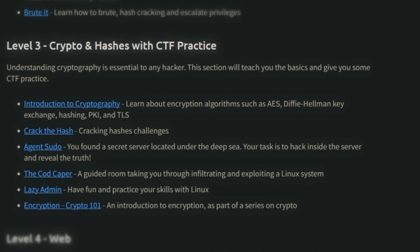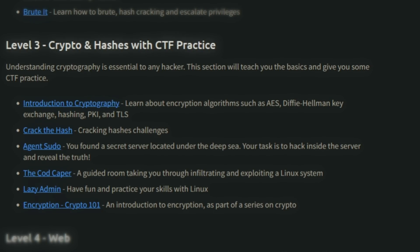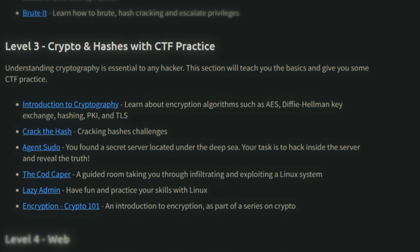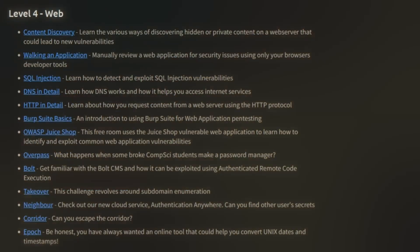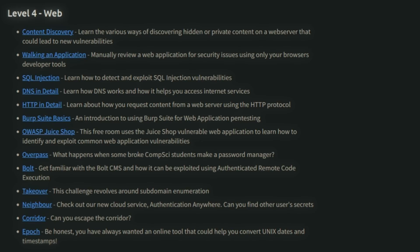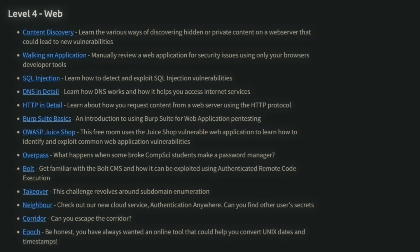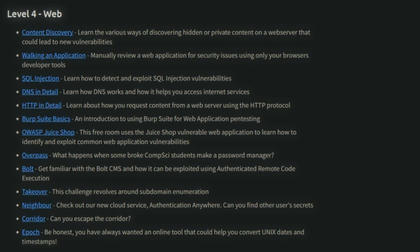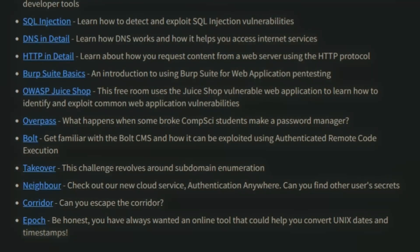In level three, you'll get your first glimpse of Capture the Flag practice with cryptography and hashing, including an introduction to cryptography, cracking hash challenges, encryption, and exploiting a Linux system. Level four gets into the web side of things, covering content discovery, SQL injection, DNS, HTTP, Burp Suite basics, exploiting the OWASP Juice Shop — a purposely exploitable web application — as well as other tools and applications you can practice exploiting.